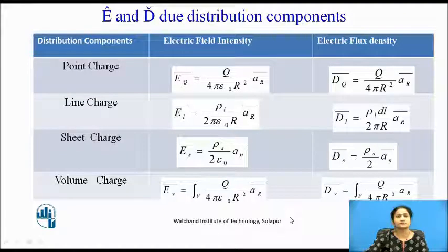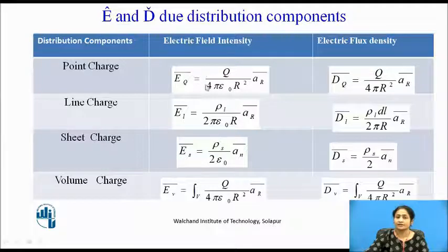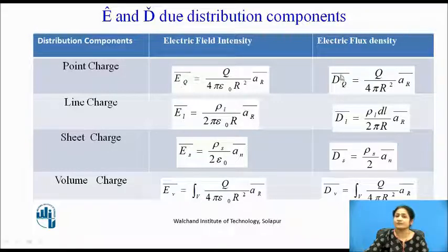Now let us discuss electric flux density due to different charge distributions. For a point charge, the electric field intensity is E = Q / (4πεr²). Moving ε₀ to the left-hand side gives the electric flux density due to point charge: D̄Q = Q / (4πr²) · ār.